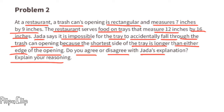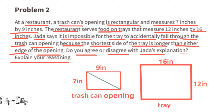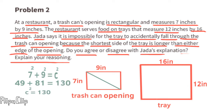I disagree with her explanation because she mentioned either edge of the opening of the trash can. More importantly, you'd need to consider the longest dimension of the trash can opening, which is the diagonal. We can use the Pythagorean theorem to figure out the length of the trash can's diagonal across its opening: seven squared plus nine squared equals the diagonal squared. Seven squared is 49, nine squared is 81, and 49 plus 81 equals c squared, so c² = 130.